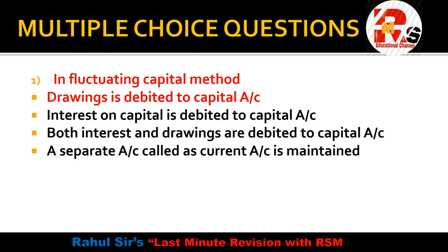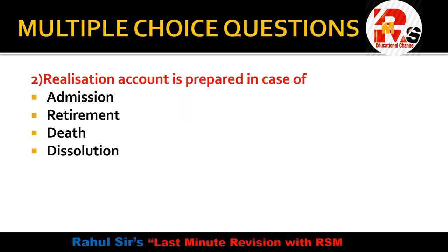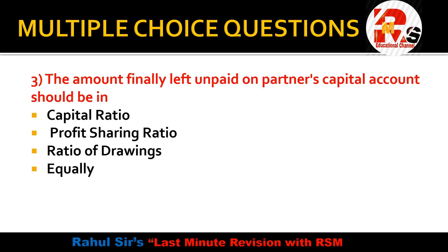Question 2 is from the chapter of amalgamation. The question asks: realization account is prepared in case of admission, retirement, death, or dissolution? We realize our assets and from those proceeds we pay off our expenses. The realization account is prepared in case of dissolution — when the firm is closed down, then the realization account is prepared and all assets are realized and liabilities are paid off. So the right answer is dissolution.